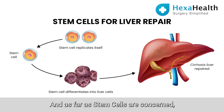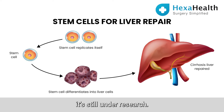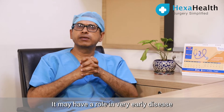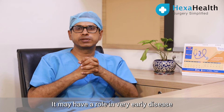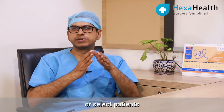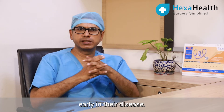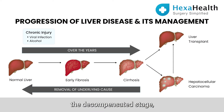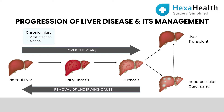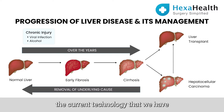As for stem cells, that's still under research. It may have a role in very early disease or select patients early in their disease journey. But once you've reached the decompensated stage — with ascites or jaundice — current technology does not support it.